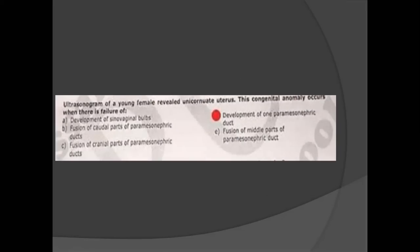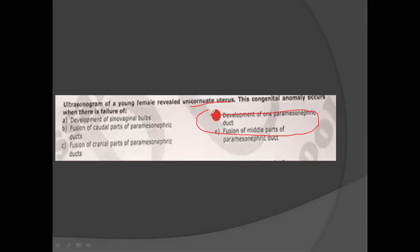Ultrasonogram of a young female showing a unicornuate uterus — this means only one side of the paramesonephric duct developed. If the development is on only one side, a unicornuate uterus results. You should remember this.